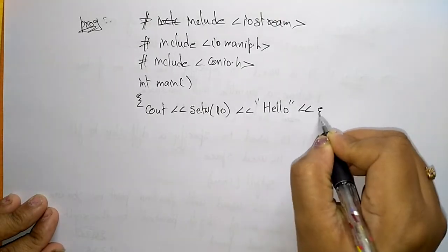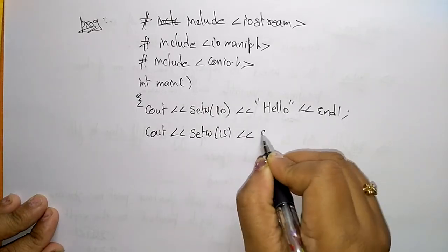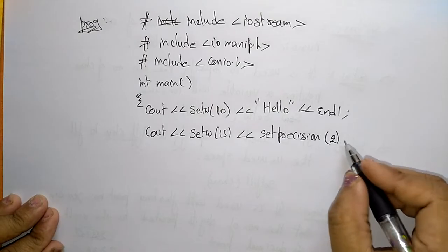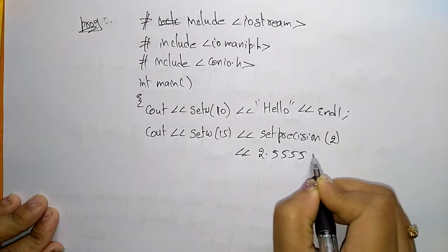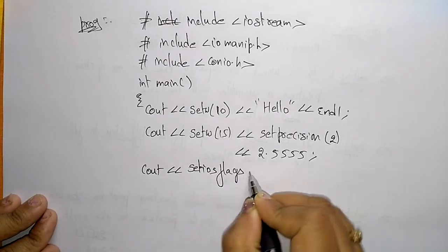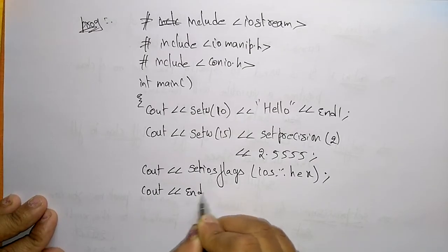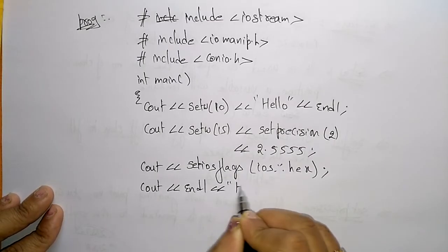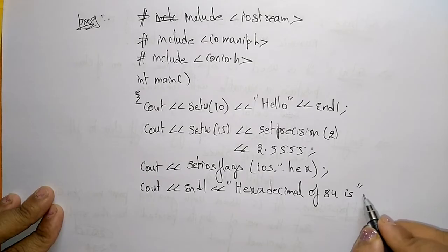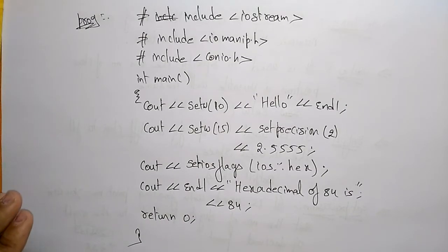First I write cout with setw(10) and print "Hello" followed by endl. Then cout with setw(15) and setprecision(2) with the value 2.555 followed by endl. Then cout with set_ios_flags for hexadecimal display, and cout with the value 84 followed by endl. Return 0.